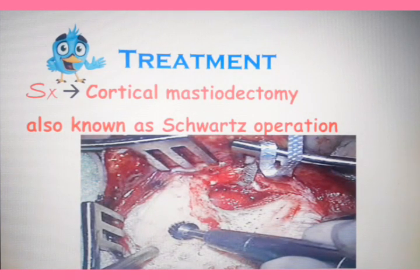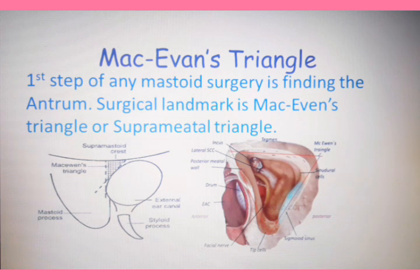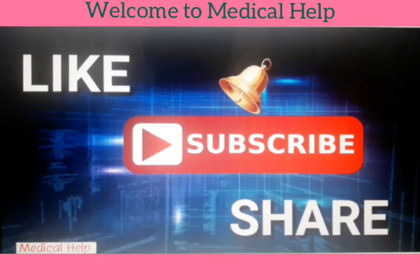The treatment is cortical mastoidectomy, also known as Schwartze's operation. In every mastoid surgery there is a surgical landmark which is MacEwen's triangle, also called the suprameatal triangle. As you can see in this diagram, this is the MacEwen's triangle.